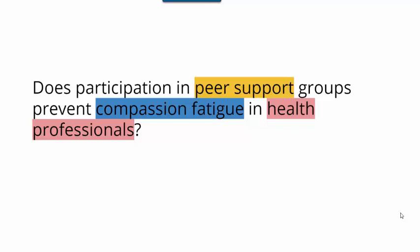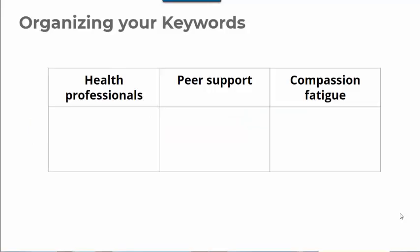Okay, so once we identify the key terms, the next step is to start using those terms to create a search strategy. We in the library have found that tables work really well in helping us think through the words we want to use in our search, as well as keeping those words organized.